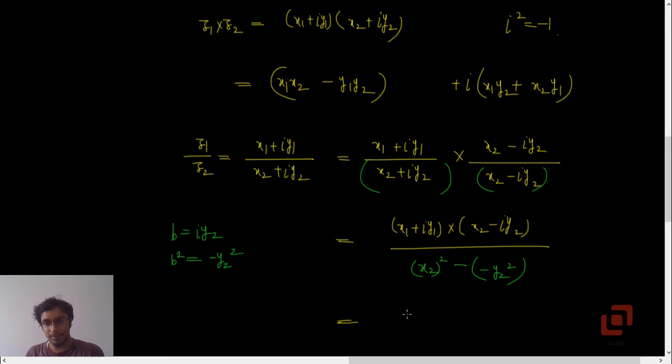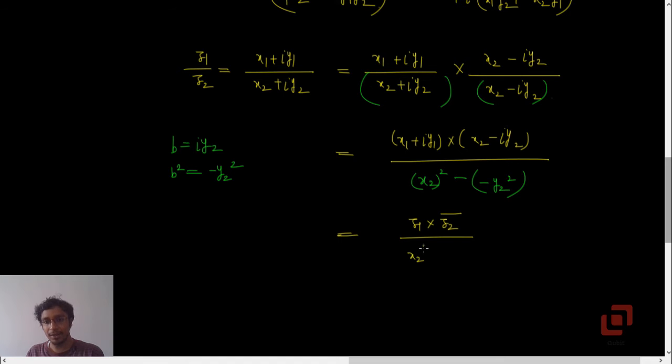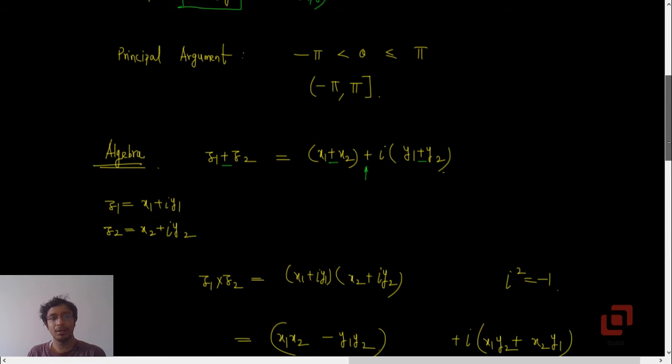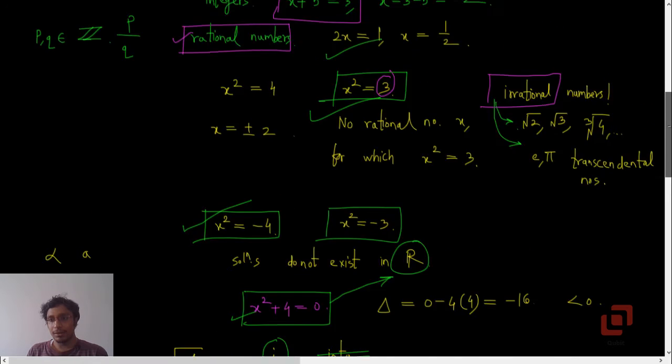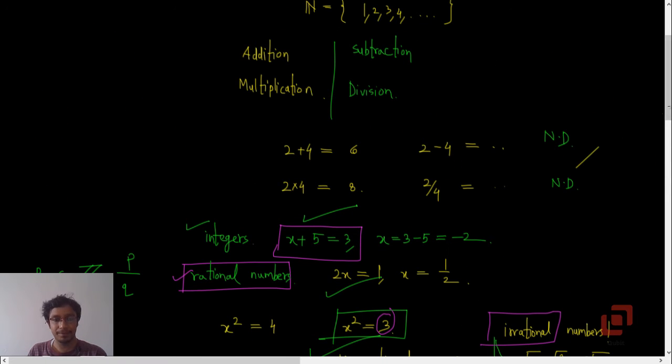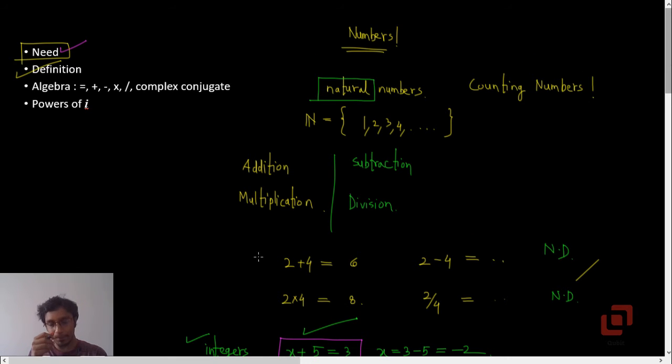So this will be equal to z1 into z2 bar upon x2 squared plus y2 squared, which is essentially z1 into z2 bar upon mod of z2 square. X2 squared plus y2 squared is square of the modulus of z. So this is how we define the division, multiplication, and addition of two complex numbers.